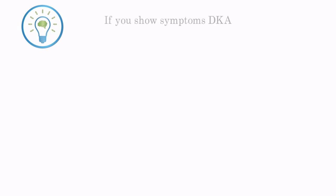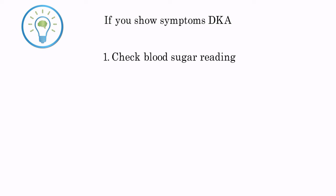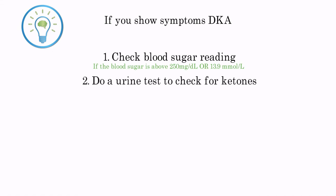If you suspect you might have DKA and exhibit some of the symptoms, you can do the following home tests to verify. Use your home glucose meter to test the blood glucose. If the blood sugar is more than 250 milligrams per deciliter or 13.9 millimoles per liter, check for ketones in the urine using a test strip. If the strip shows ketones in the urine, you might be in DKA.